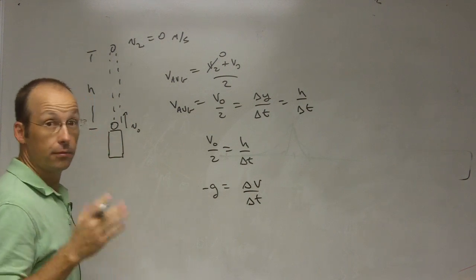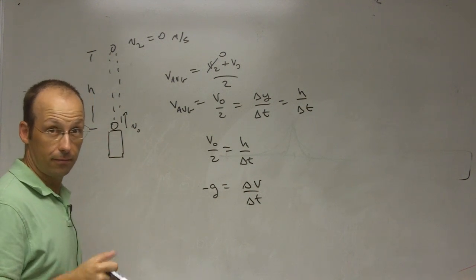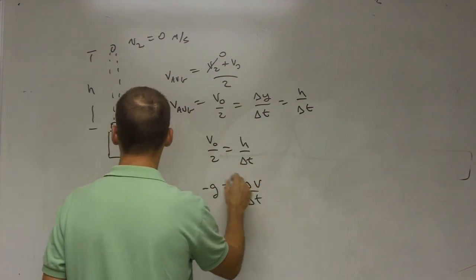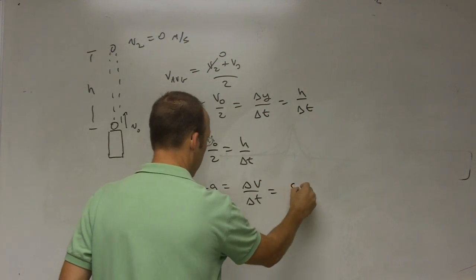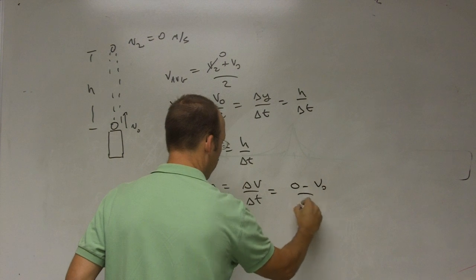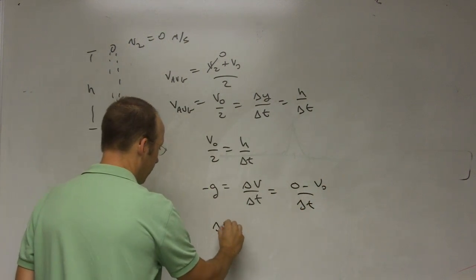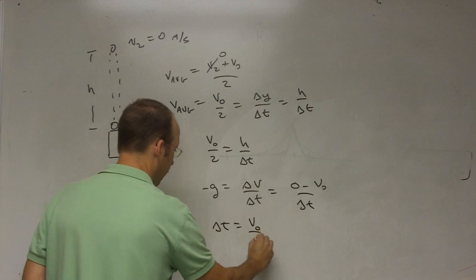So the final velocity is, say it, 0, right? Okay, good job. And the initial velocity is v0, so this is going to be 0 minus v0 over delta t. So I can get delta t equals v0 over g.